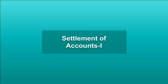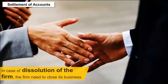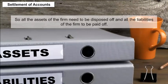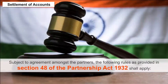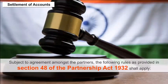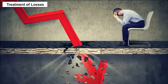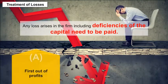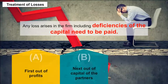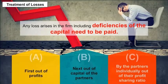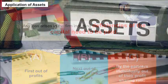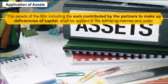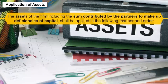Settlement of Accounts. In case of dissolution of the firm, all assets need to be disposed of and all liabilities paid off, subject to agreement amongst the partners. The following rules under Section 48 of the Partnership Act 1932 apply. Treatment of losses: Any loss, including deficiencies of capital, must be paid — first out of profits, next out of capital of the partners, and lastly by the partners individually out of their profit sharing ratio. Application of Assets: The assets of the firm, including contributions by partners to make up capital deficiencies, shall be applied in a specific manner and order.